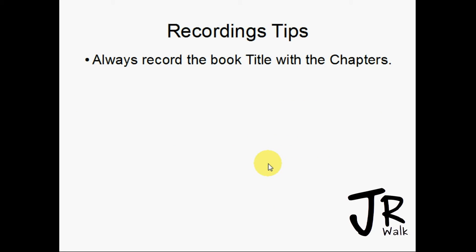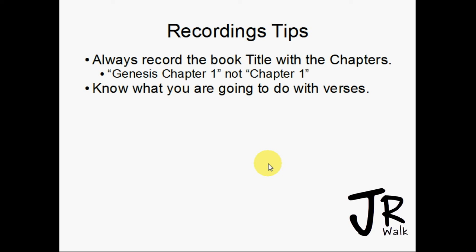Some recording tips: always record the book title with the chapter. Always read 'Genesis chapter 1,' 'Genesis chapter 2,' 'Genesis chapter 10' — don't just say 'chapter 1,' 'chapter 2.' If the listener is flipping through they won't know what book they're in. Yes, for the very first chapter it will be repeated, but that's better than the person being lost. 'Chapter 1' does not help them, especially if you have multiple books recorded.